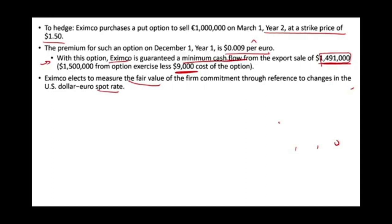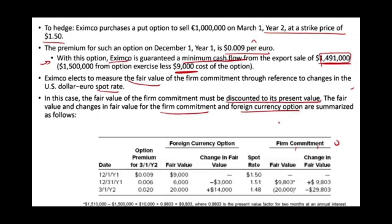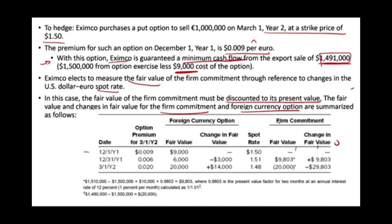You could use either the spot rate or the forward rate, but the company must determine which one to use — that's part of their documentation for the transaction to qualify as hedge accounting. In this case, the fair value of the commitment must be discounted to present value. The fair value and changes in fair value of the firm commitment and the foreign currency option are summarized below. On December 1st, when the sale commitment was made, the option premium paid was $0.009, meaning the foreign currency option is valued at $9,000, and the spot rate is $1.50.